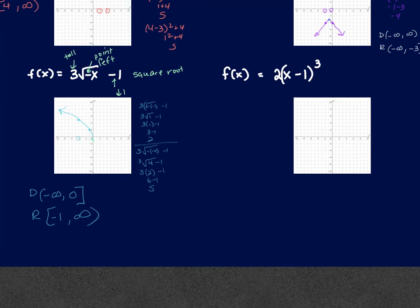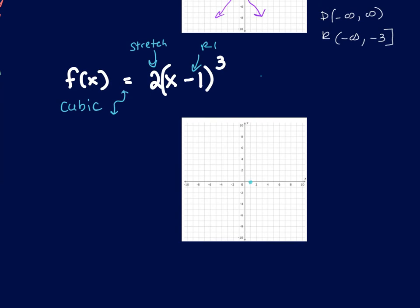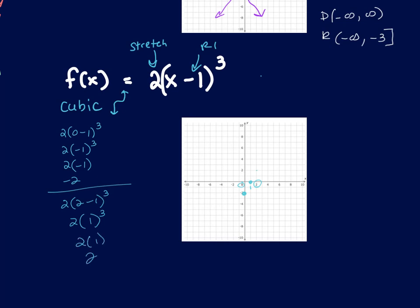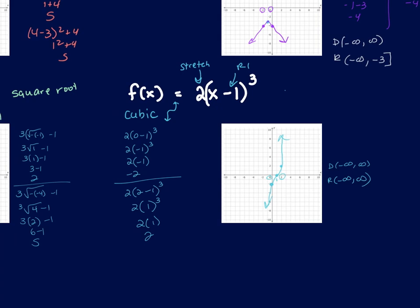For f(x) equals 2 times (x minus 1) cubed: this is the cube function. The 2 stretches it. The minus 1 inside says shift right 1. Plot the center point at (1, 0). Plug in x equals 0: 2(-1)³ = 2(-1) = -2, giving (0, -2). Plug in x equals 2: 2(1)³ = 2, giving (2, 2). Connect the points. Domain: negative infinity to positive infinity. Range: negative infinity to positive infinity — no restriction on either.